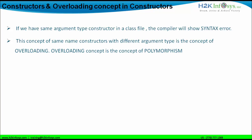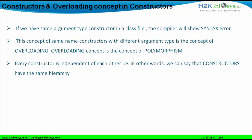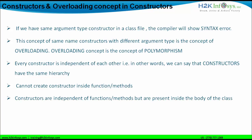The concept of same-name constructors with different argument types is the concept of overloading, and overloading is the concept of polymorphism. Every constructor is independent of each other — in other words, constructors have the same hierarchy. We cannot create a constructor inside another constructor; the compiler will show an error. We also cannot create a constructor inside a method of a class file. That is why every constructor is independent, and a constructor cannot be created inside a function body or a method body.